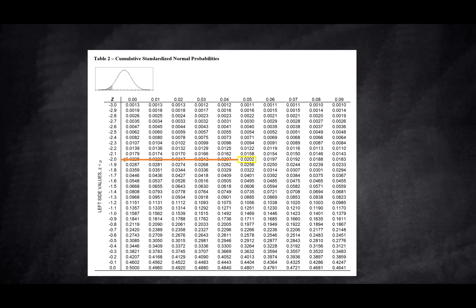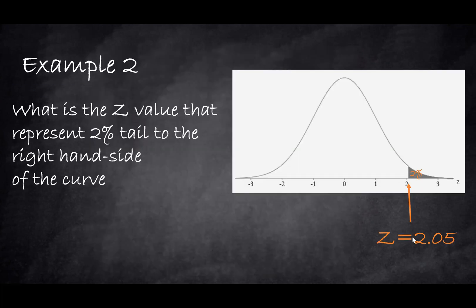So reverse lookup, you look at the number to the first decimal, it's negative 2.0, and the second decimal is 5. So we'll end up with Z equals negative 2.05, but because we are going to use the opposite side, we will use the positive value. So that's how we find the equivalent Z value.